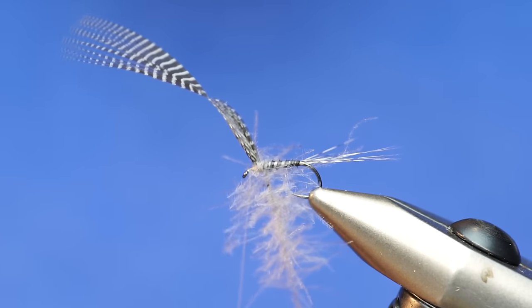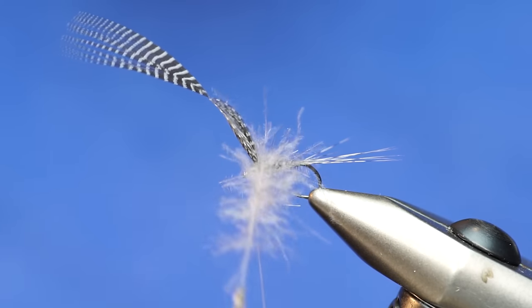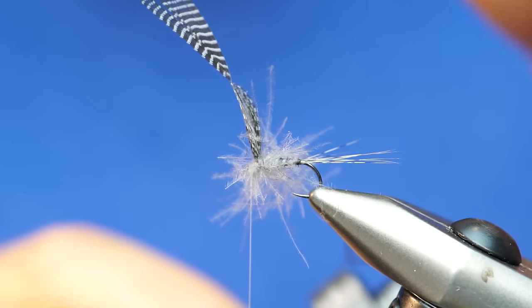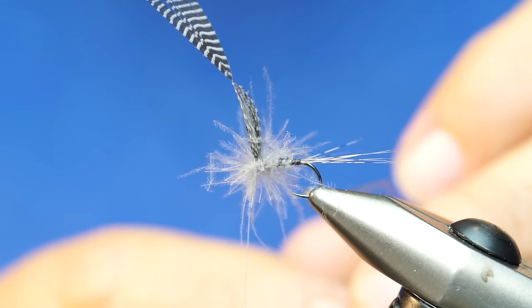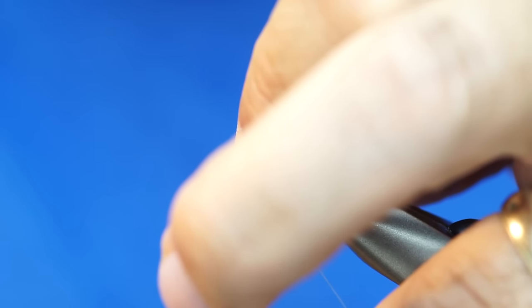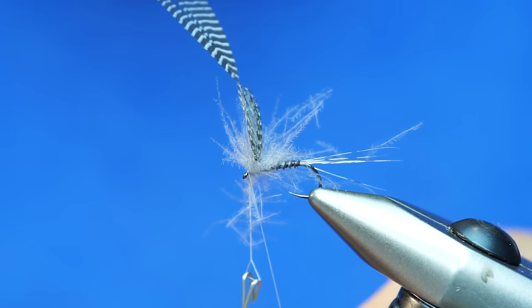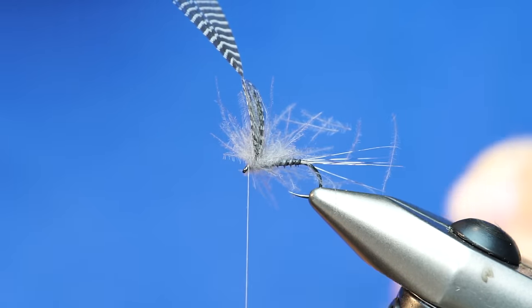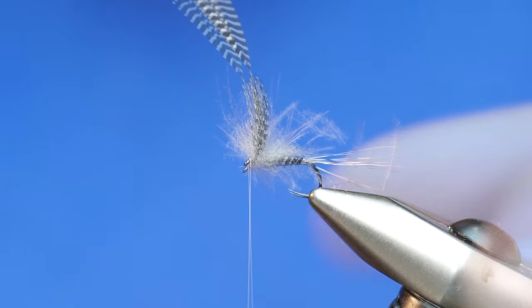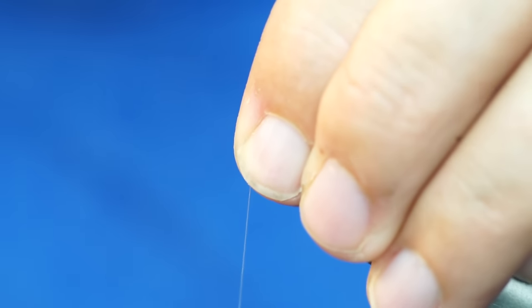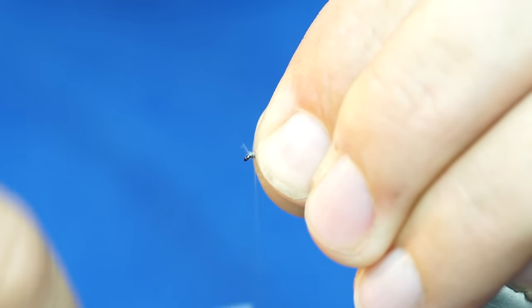What I'll do here is once I get down to my CDC loop, a couple of wraps behind. Now I'm going to go a couple of wraps right in front of that wing. You really only need two. Then I will just tie that off. Two in front, two in back. Then come in here and make sure I've got all the stragglers out of the way and clean up my head and whip finish.